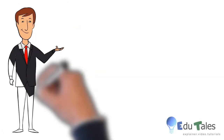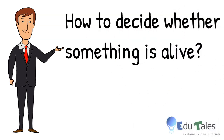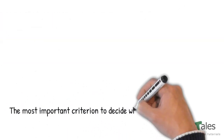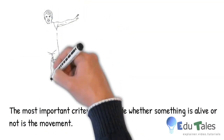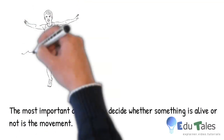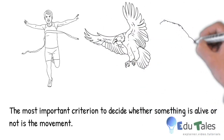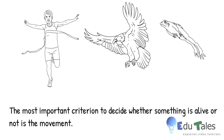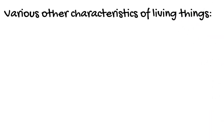How to decide whether something is alive or not? The most important criterion to decide whether something is alive or not is movement. As you can see, an athlete running, a bird flying, and a frog skipping — all these are showing movements, so they are living. Plants also show slow movement, so they are also living.